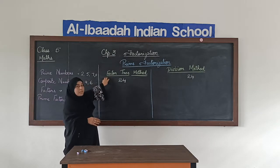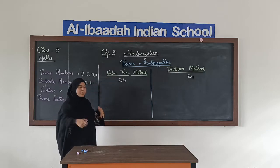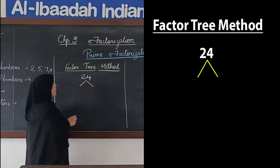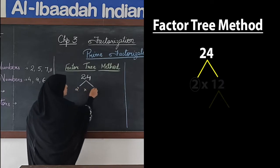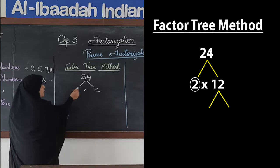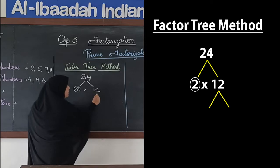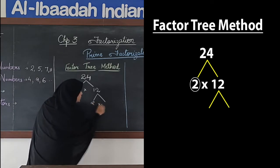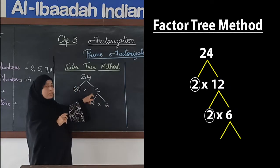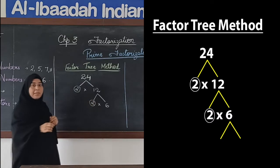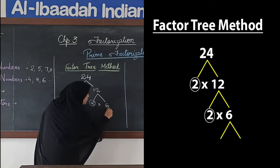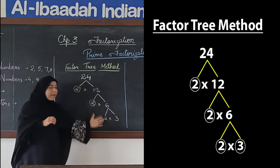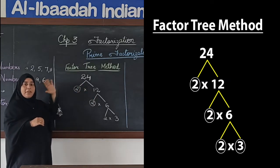To start, I will recall the factor tree method. If you remember, it goes on like a tree. I will find the prime factors of 24. So, which 2 numbers multiply to give us 24? It can be 2 into 12. Here you can see 2 is a prime number — we will keep it aside. This number 12 we can further divide: which 2 numbers multiply to give 12? That is 2 into 6. Again, 2 is a prime number. Then 6 further: 2 into 3 gives us 6. That is why it is called factor tree — it goes like a tree.